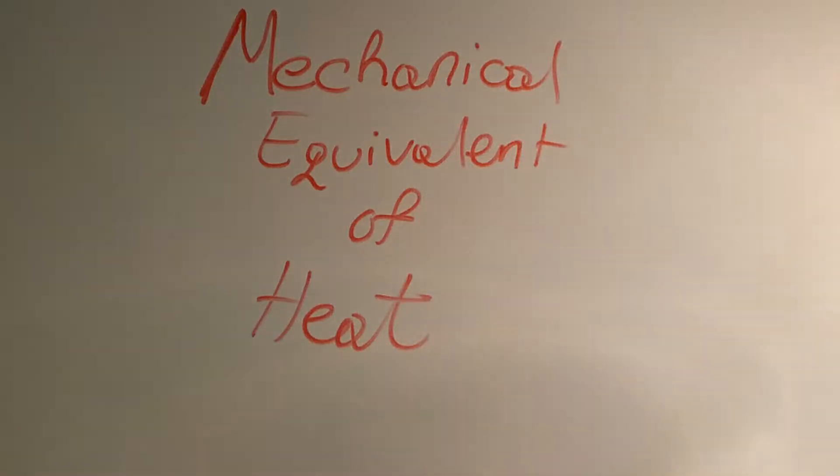Today we are going to study about the mechanical equivalence of heat. In the last video we discussed what is internal energy and what is heat, and we saw that the units for heat are joules. Besides joules we use calories and kilocalories, and we said that 1 calorie is equal to 4.186 joules, but we didn't explain why and how scientists came to that derivation.